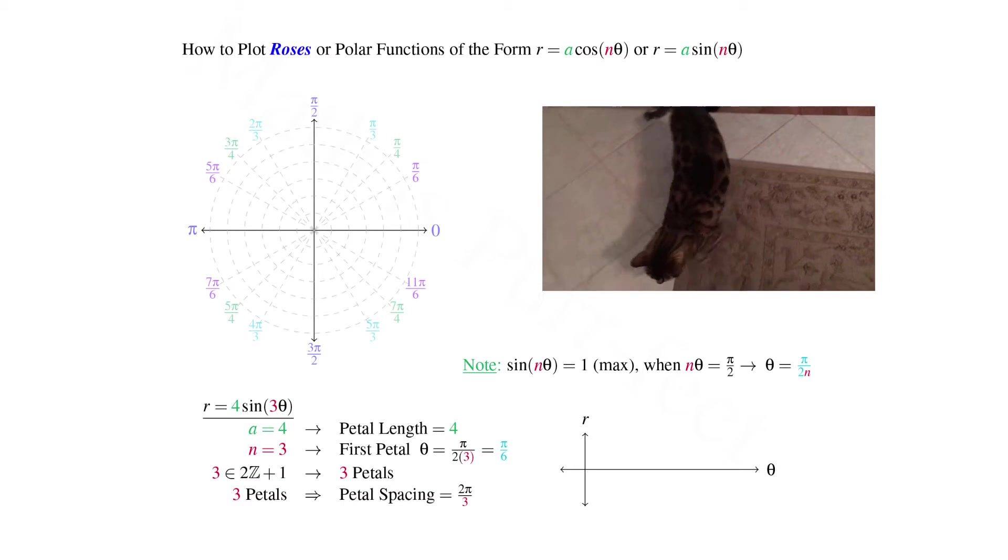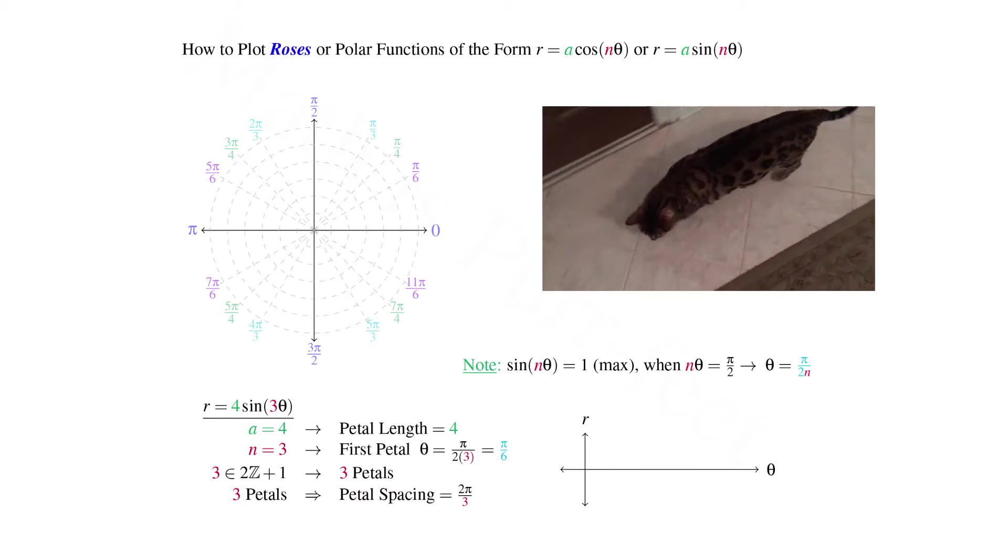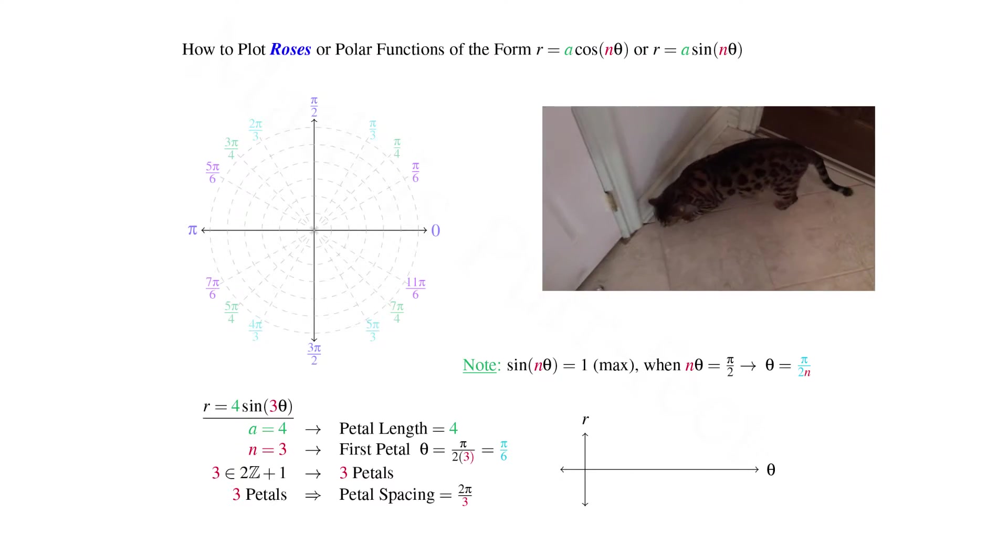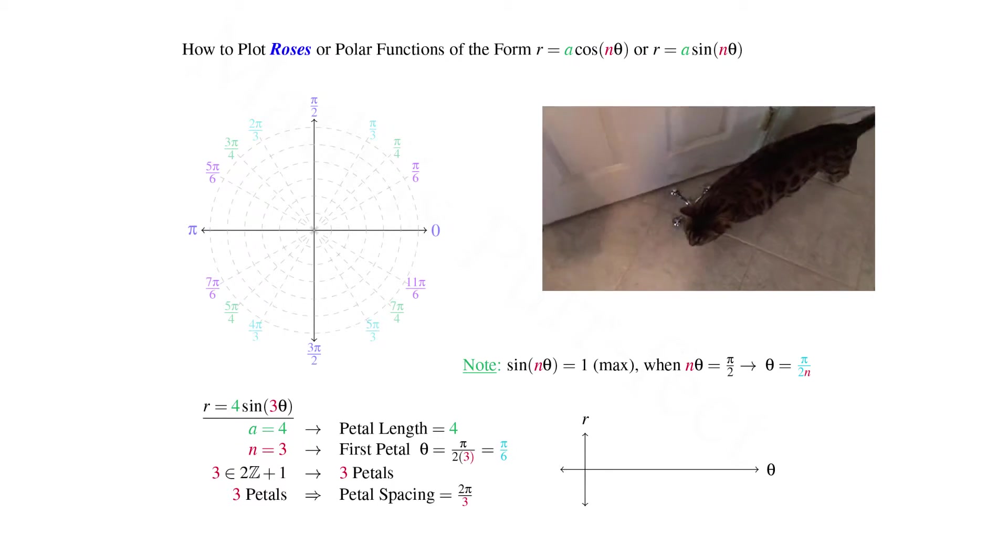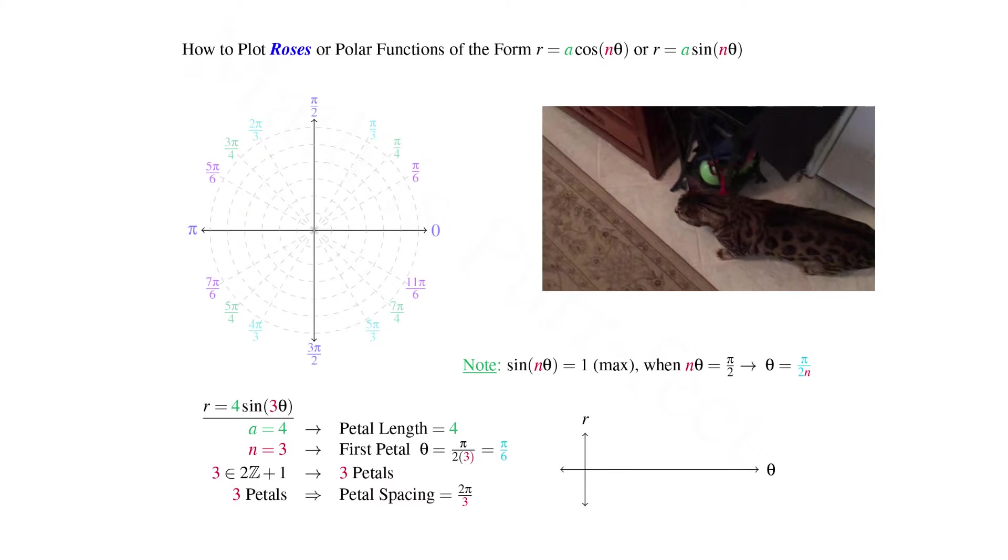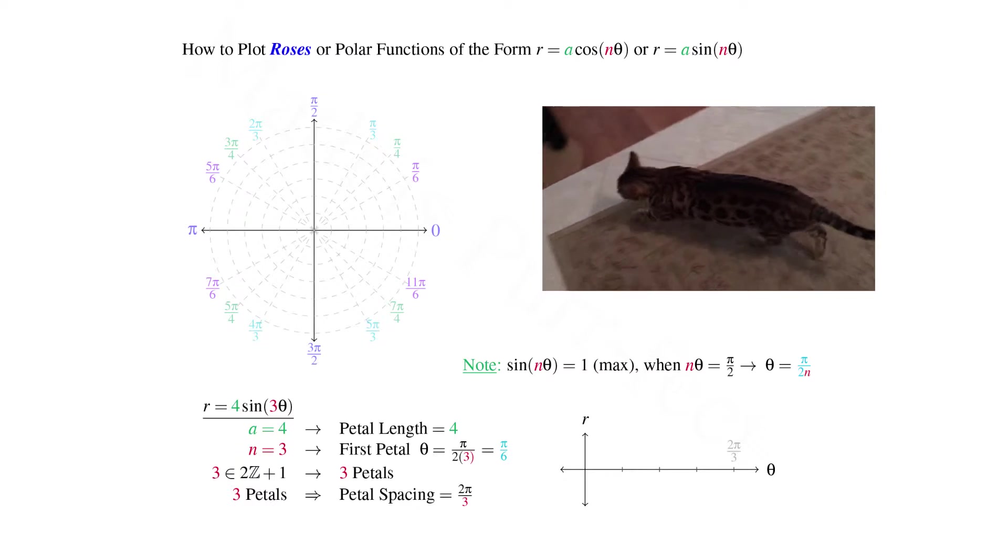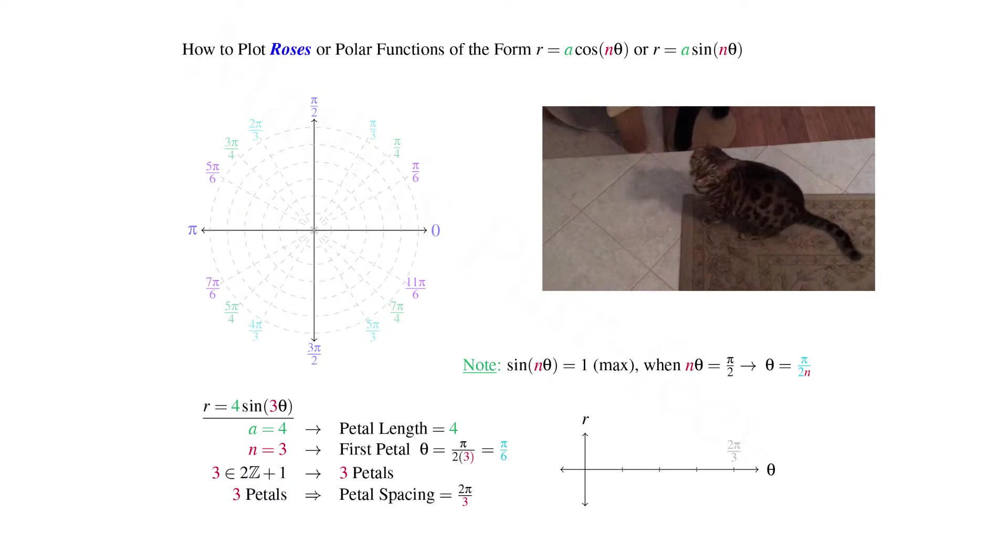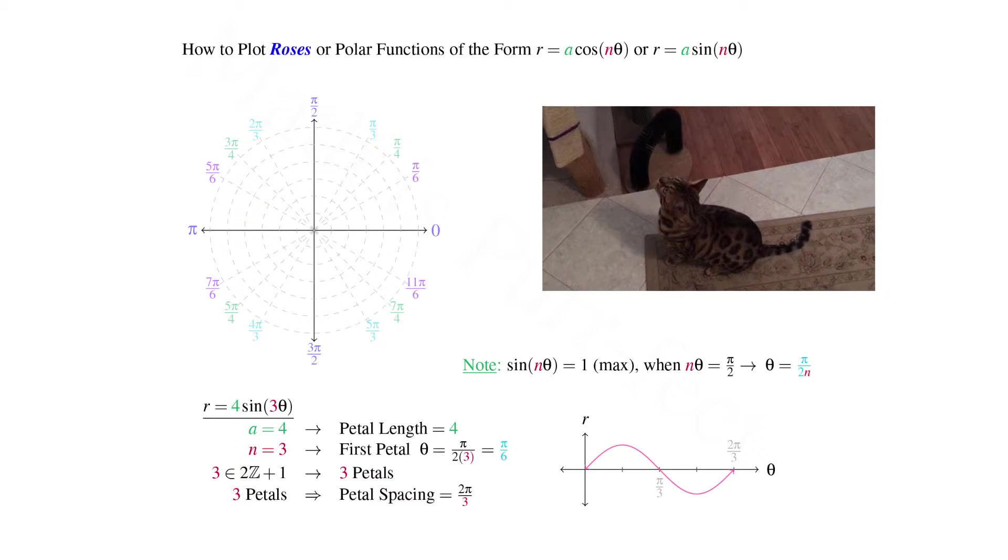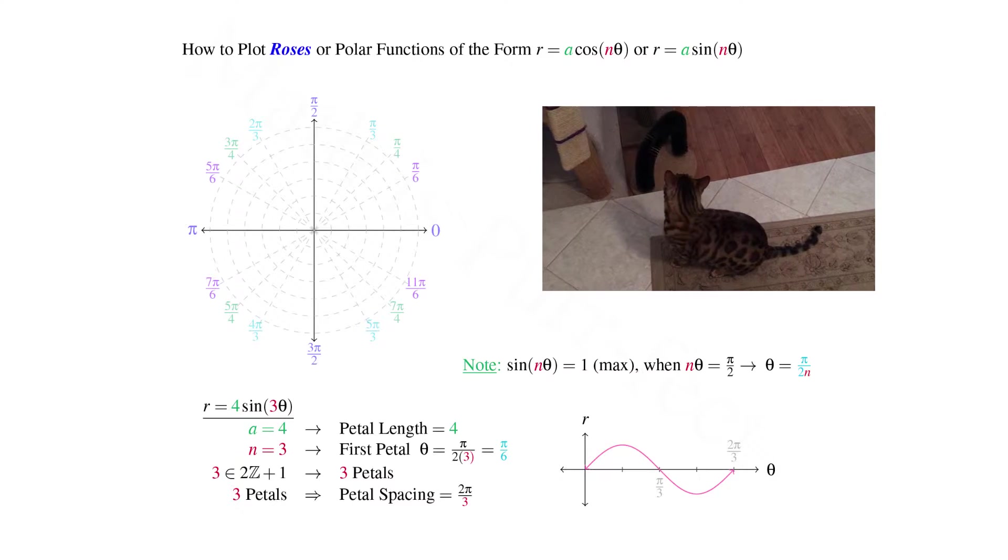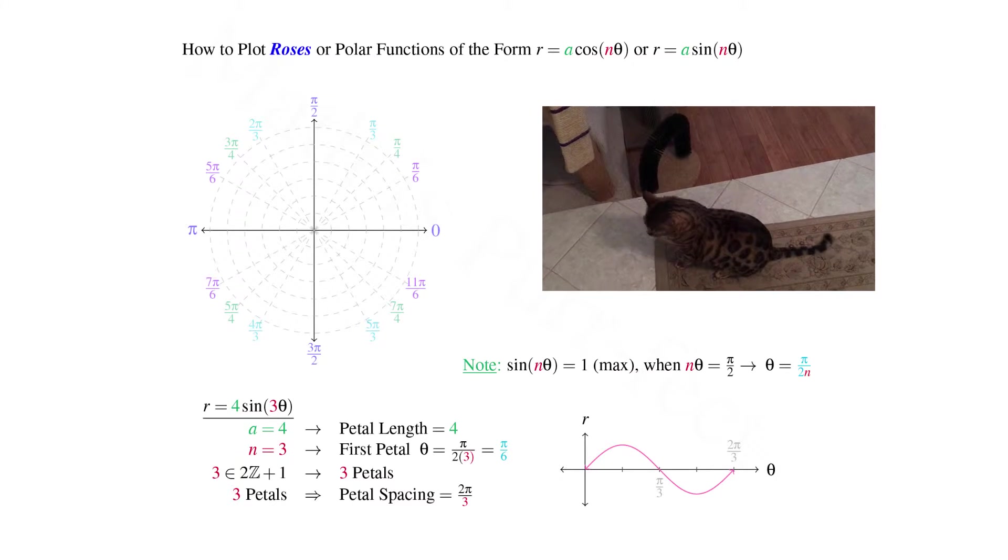Now let's consider the plot of the function in the Cartesian system with angle θ as our independent variable and radius r as our dependent. We note that the period for sin(3θ) is the standard period 2π divided by 3. Hence we will sweep out an entire period for sine within a measure of 2π/3 radians.